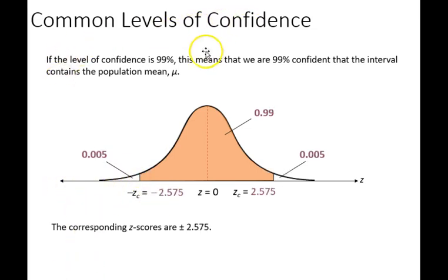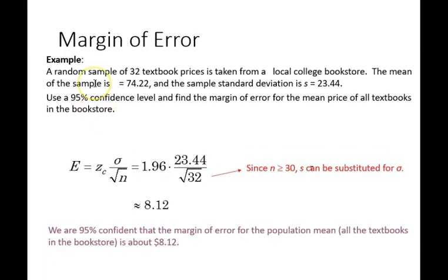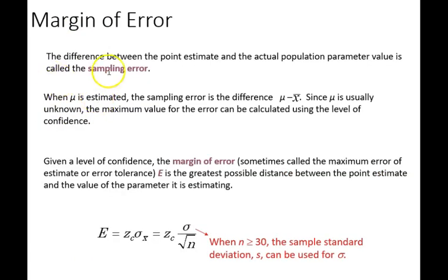The third common level of confidence is 99%. You can see this outside area keeps shrinking the wider we draw our confidence interval. Next we can look at the margin of error, which is an interval around the sampling error. Since we don't know whether our sample estimate is actually the population parameter, we need a margin to give us confidence that we're at least in the ballpark.